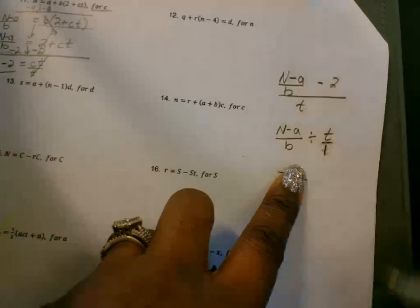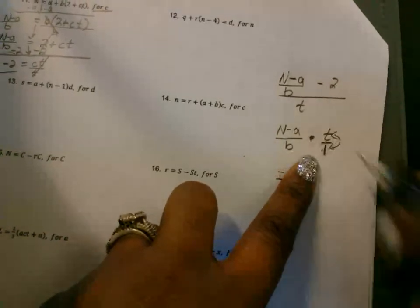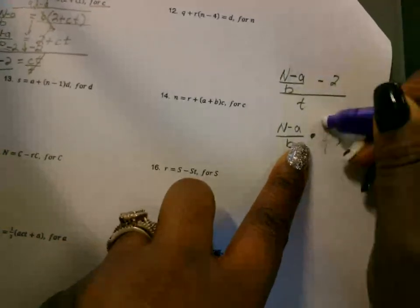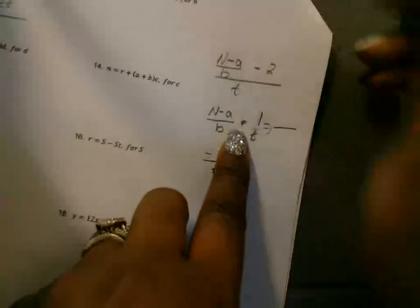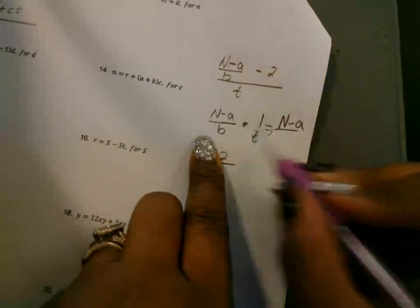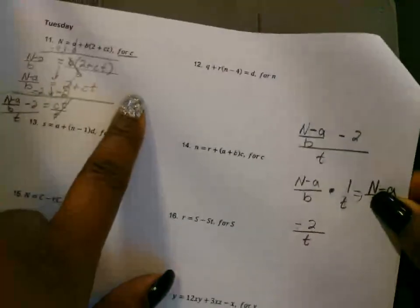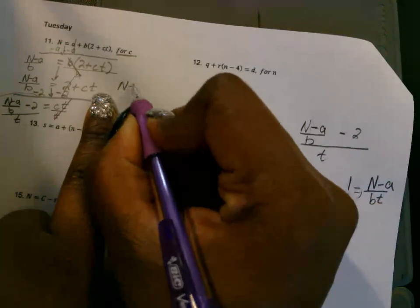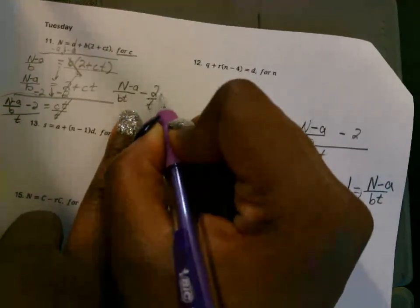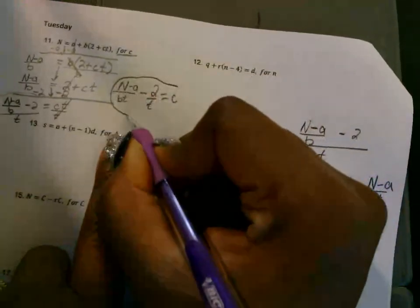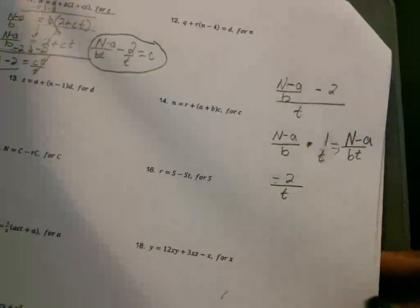Put a one under it. Change the division to multiplication and then flip the second fraction, so this is going to be one over T. Now you're ready to multiply straight across. On the top you get N minus A, and on the bottom you get BT. So let's put this all together. This side right here, simplified, looks like this: you got N minus A divided by BT, and then you have minus 2 over T. This is the answer you'll probably see as an answer choice. If you need to watch that again, you can rewind and watch me do those steps again. That's the beauty about a video.